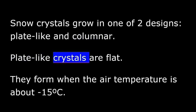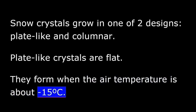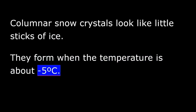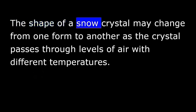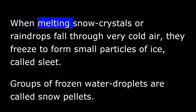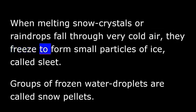Plate-like crystals are flat. They form when the air temperature is about 15 degrees below zero Celsius. Columnar snow crystals look like little sticks of ice. They form when the temperature is about 5 degrees below zero. The shape of a snow crystal may change from one form to another as the crystal passes through levels of air with different temperatures. When melting snow crystals, or raindrops, fall through very cold air, they freeze to form small particles of ice, called sleet.